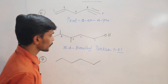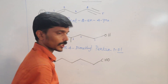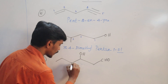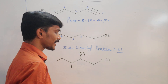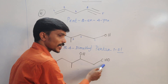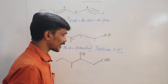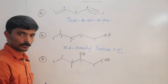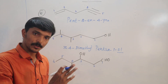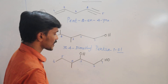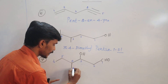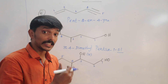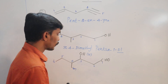Now we have a compound containing a CHO group — that is an Aldehyde group — and also an OH group. In priority order, CHO (Aldehyde) comes first. Numbering right to left: 1, 2, 3, 4, 5, 6. The fourth position has a methyl substituent, and the third position has a hydroxy group.